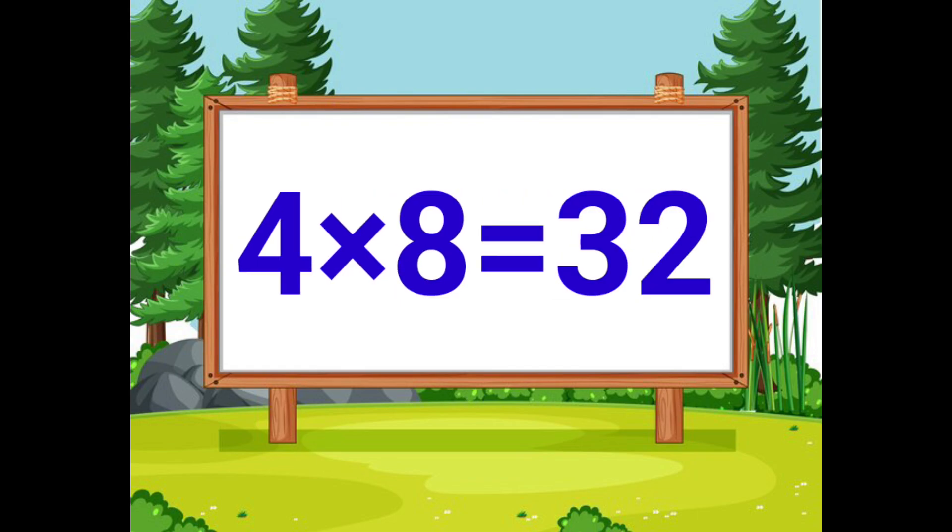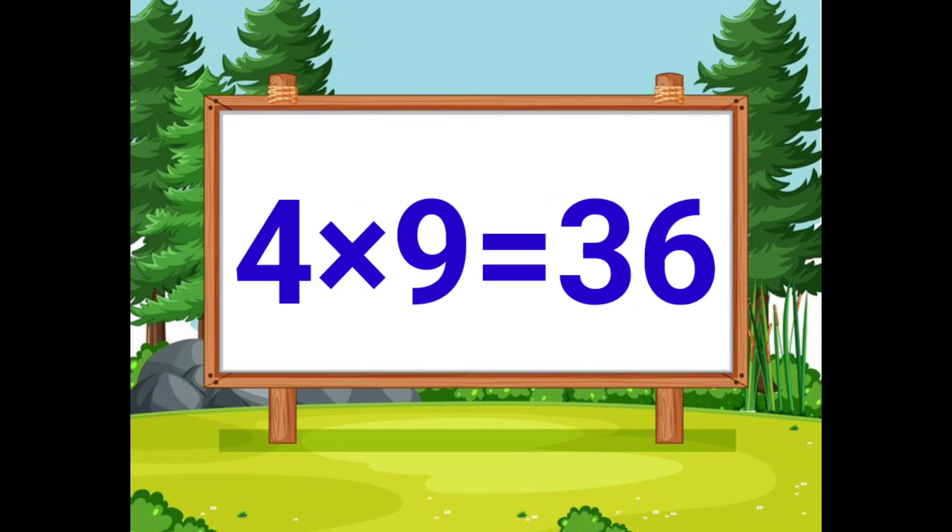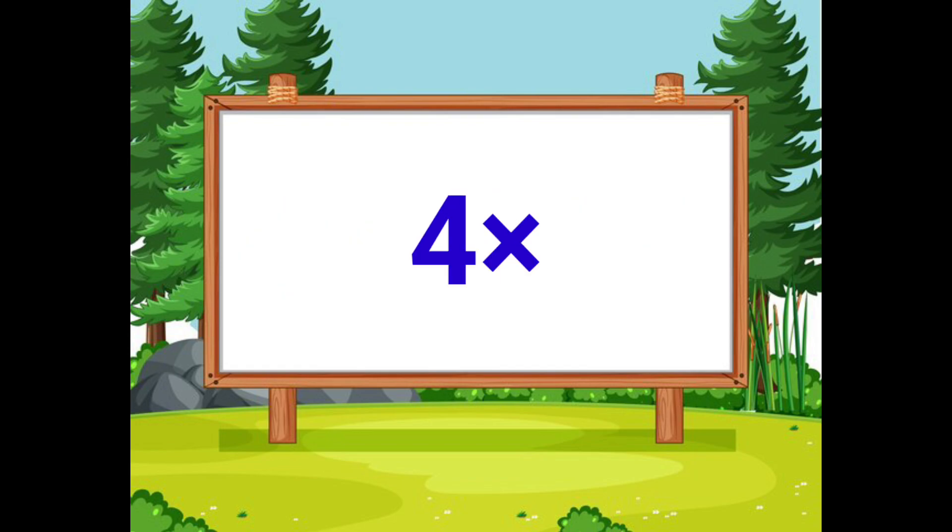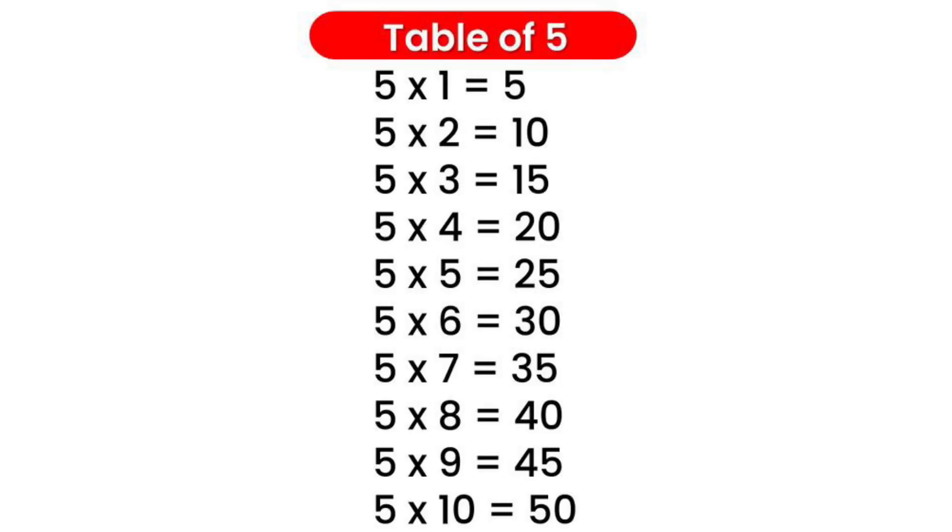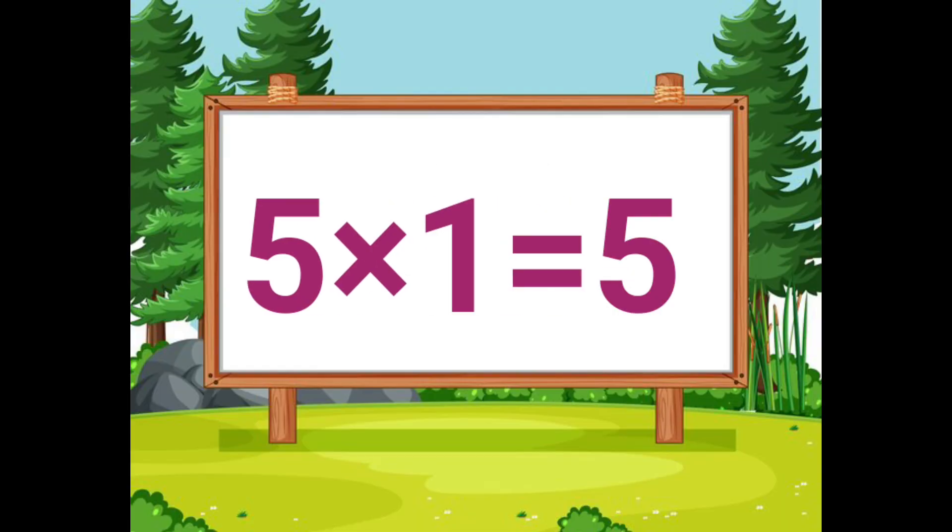Four eights are thirty-two. Four nines are thirty-six. Four tens are forty. Now we will see the fifth table. Five ones are five.